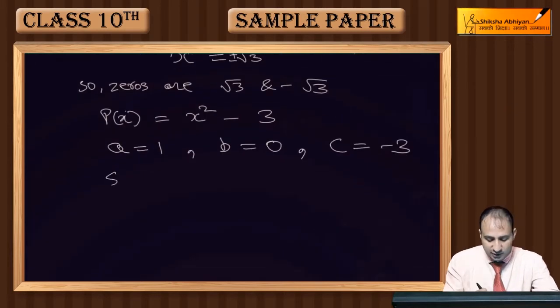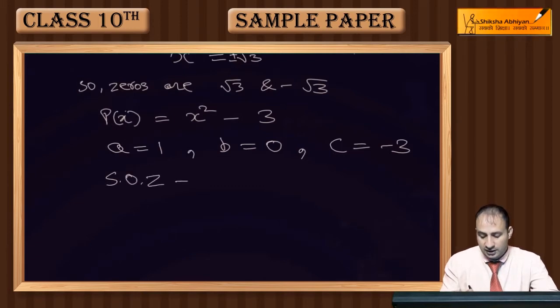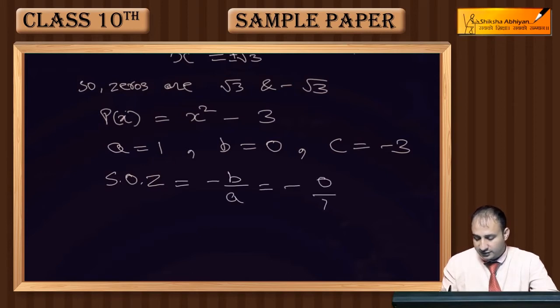Now for sum of zeros, the formula is -b/a, which equals -0/1, that is equal to 0.